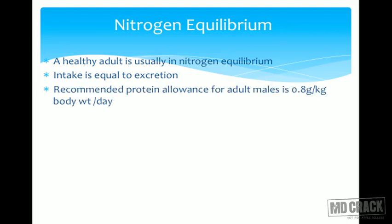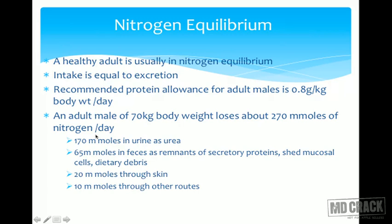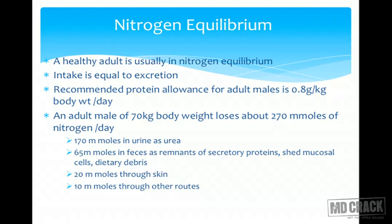To maintain nitrogen equilibrium, the recommended protein allowance for an adult male is 0.8 grams per kg body weight per day — roughly 70 grams for a 70 kg individual. A 70 kg adult male loses about 270 millimoles of nitrogen per day: 170 millimoles in urine as urea, 65 millimoles in feces as remnants of secretory proteins and shed mucosal cells, 20 millimoles through skin, and 10 millimoles through other routes.